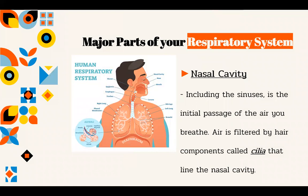Now let us first review the major parts of the respiratory system. The nasal cavity, including the sinuses, is the initial passage of the air you breathe. Air is filtered by hair-like components called cilia that line the nasal cavity.